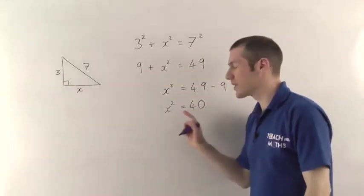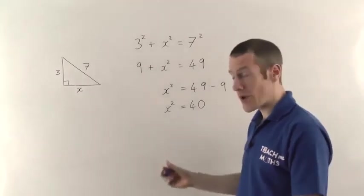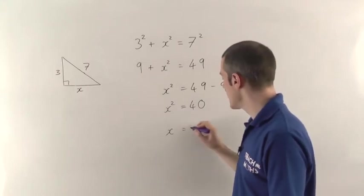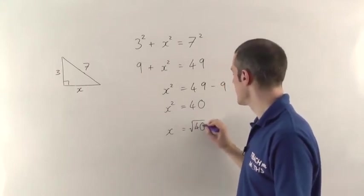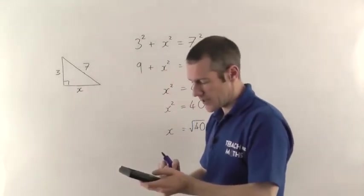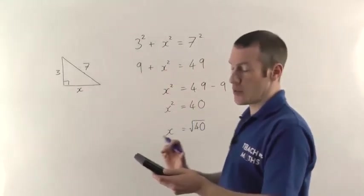Now 49 minus 9 just gives you 40. So again, to work out the length of the x, you just have to square root both sides. So if you square root x squared, you just get back to x. And if we square root 40, again on the calculator, we're going to get 6.3.